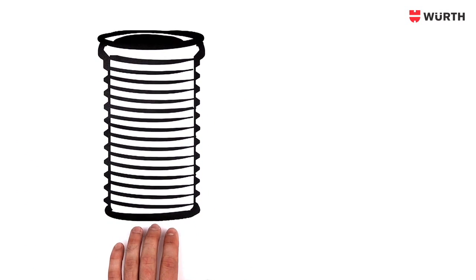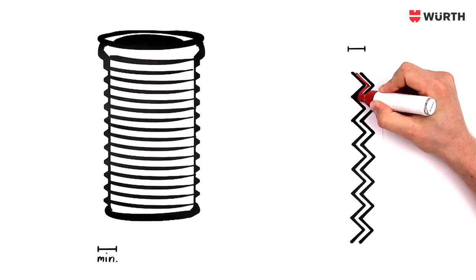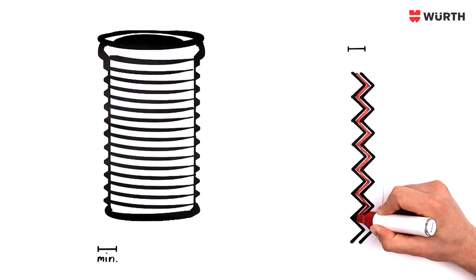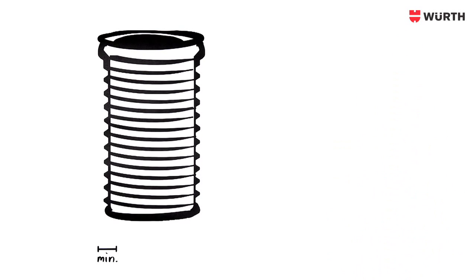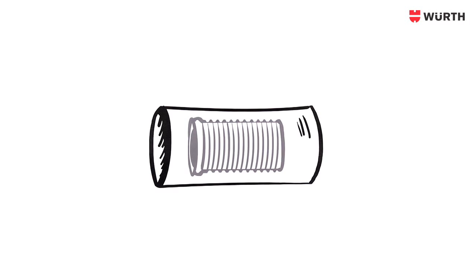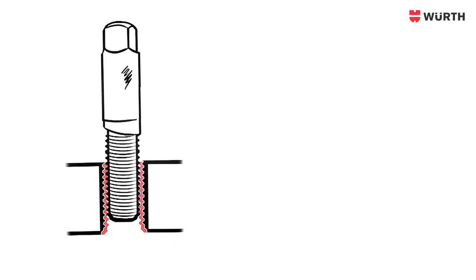The insert is very thin-walled and takes up very little space because the internal and external threads are perfectly synchronized. This works because TimeSert bushing inserts are turned from the solid, which is effort-intensive but highly accurate. This allows for the special trick that sets TimeSert apart from the rest.